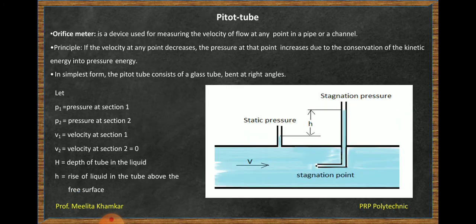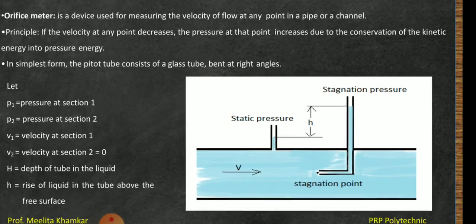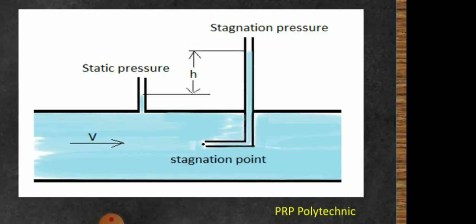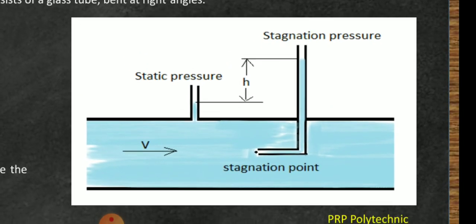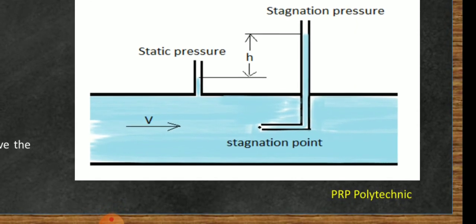Third is pitot tube. In the pitot tube, the flow is measured with the help of pitot tube. If you observe here, it is a simple type of tube. It is a glass tube which is inserted into the pipe where the flow is to be measured. Both lines are perpendicular to each other.